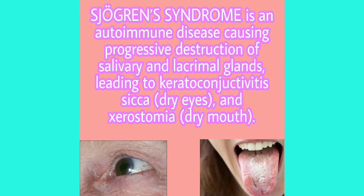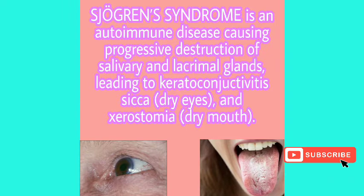Sjögren's syndrome is an autoimmune disease. In autoimmune diseases, the body makes antibodies against its own cells. In Sjögren's syndrome, there is progressive destruction of the salivary and lacrimal glands, leading to...